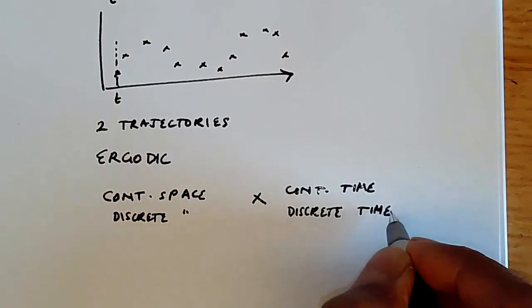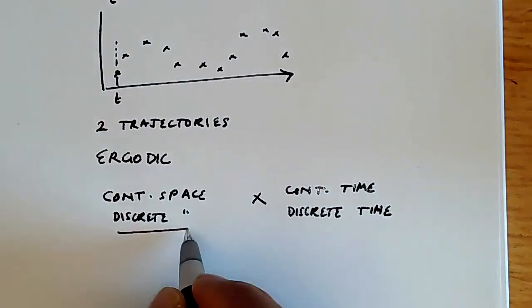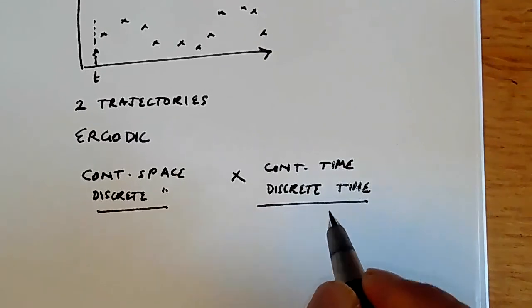For our purposes, we'll be focusing mostly on discrete space and discrete time, because that is what characterizes essentially all computer systems.